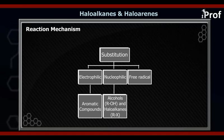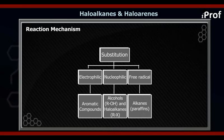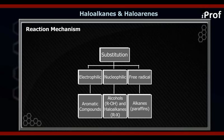Free radical substitution reaction is shown by alkanes, also known as paraffins and saturated hydrocarbons. The term saturated and unsaturated refers to whether a compound contains a pi bond: if a compound contains a double bond or triple bond — a pi bond — it is unsaturated; if it does not contain a pi bond, it is saturated.